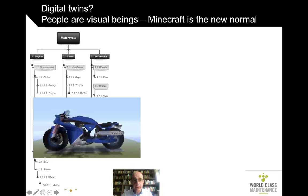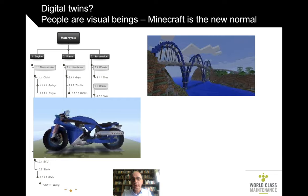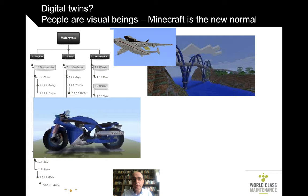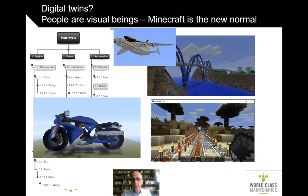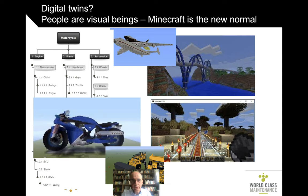Here's a Minecraft representation of a motorcycle. If I talk about the frame, it's up here, and the engine is here, and the suspension is up there. And then I want to double-click on those and see what's in there. I want to do that with other types of assets like bridges, planes, installations, airports, big machines. That's what I want.